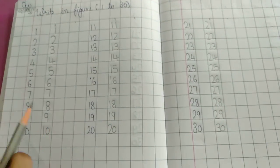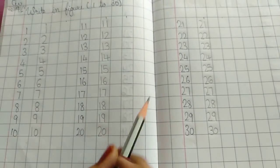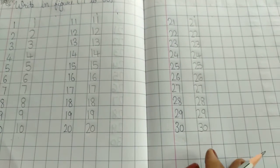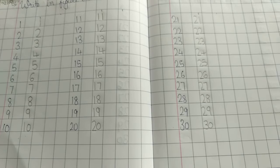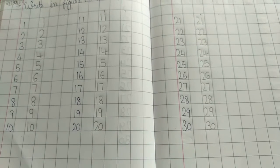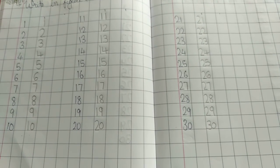Students, you need to write 1 to 10 two times, 11 to 20 two times, and 21 to 30 two times in classwork. After classwork is complete, you need to write the same in homework as well. Thank you.